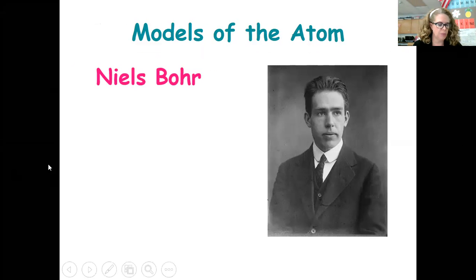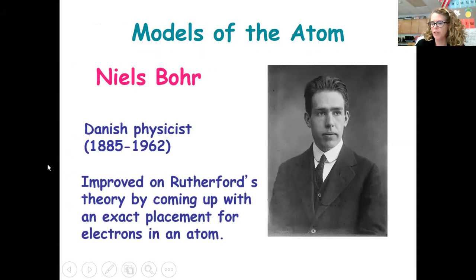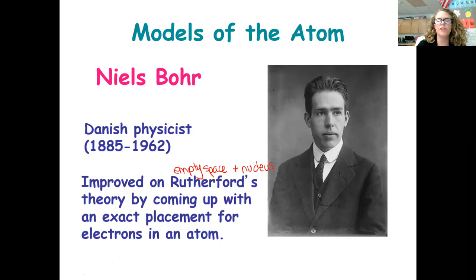This is Niels Bohr and he's Danish. You don't need to know the time period or where he's from — we just really need to know that he improved on Rutherford's theory. Remember, the Rutherford model is our empty space and positive nucleus model, where electrons are just outside the nucleus somewhere. Rutherford didn't give a precise location for those electrons, so Bohr comes along and with quantum theory and some math he's able to establish more precise locations of the electrons.